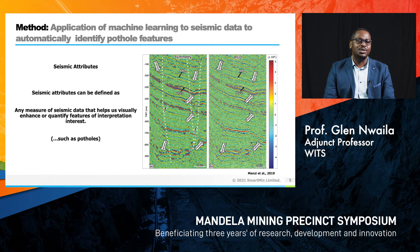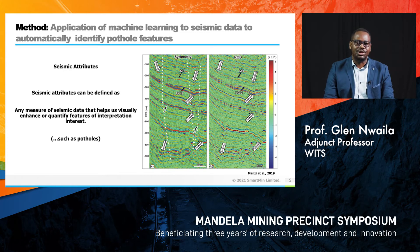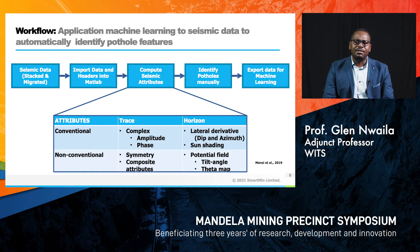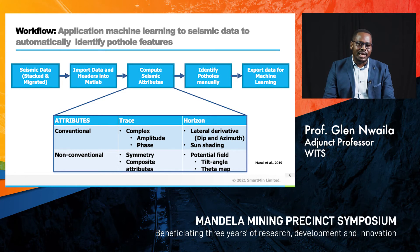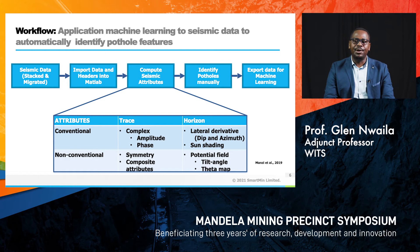The journey starts with post-processing of data that was acquired previously. We need to extract specific seismic attributes, which can be defined as any measure of seismic data that helps us to visualise, visually enhance, and quantify features for the interpretation of specific features such as potholes. To do this, we have developed a methodology — credited to my colleague Musa Manzi and others — to extract key seismic attributes from older geological data, starting with seismic stacking and migration, then importing the data into a suitable format using programs such as MATLAB, and then computing the seismic attributes.